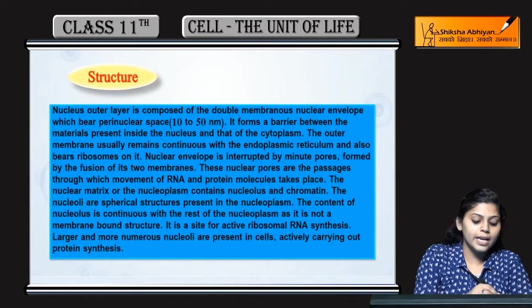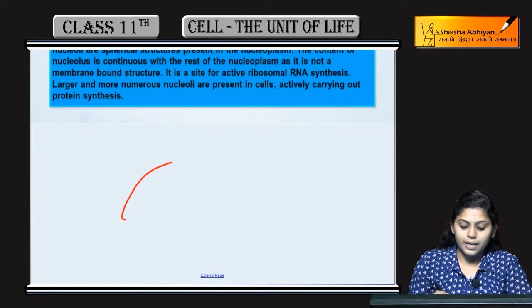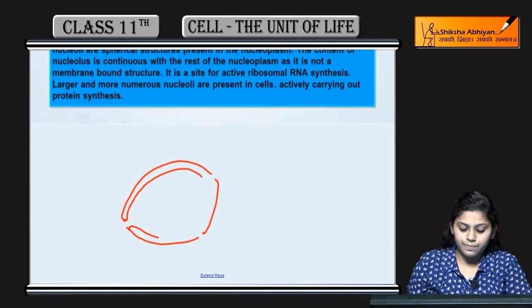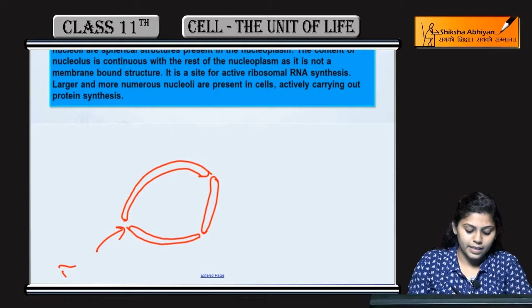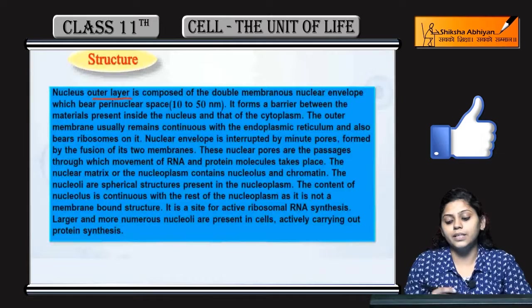Structure ki baat karein to kaisa structure hota hai? Double membranous structure hota hai nucleus ka. Center mein nuclear pore bhi present hota hai jahaan se sirf selected substances ki entry hoti hai.